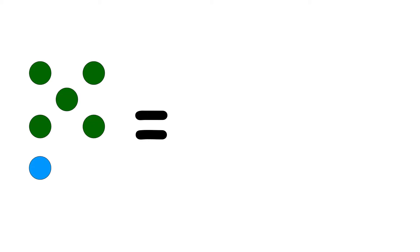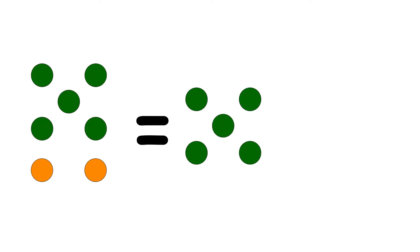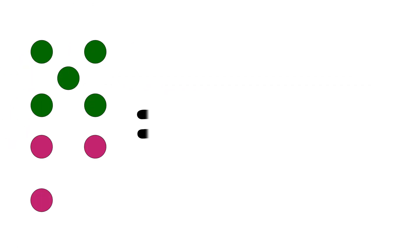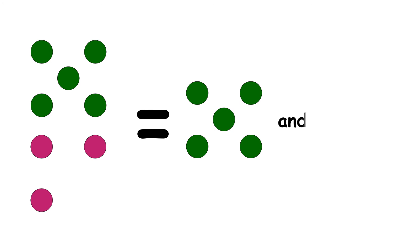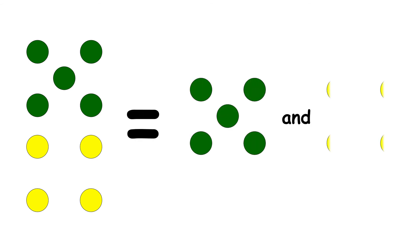We're going to finish by going over the most important ways to partition the numbers 6 to 9 once more. First, there are the bonds with 5. So 6 is the same as 5 and 1. 7 is the same as 5 and 2. 8 is the same as 5 and 3. 9 is the same as 5 and 4.